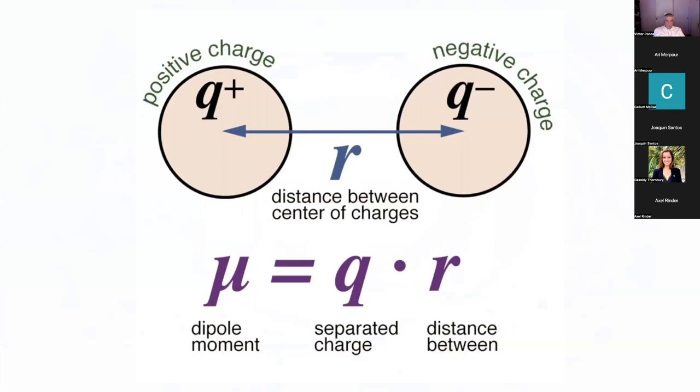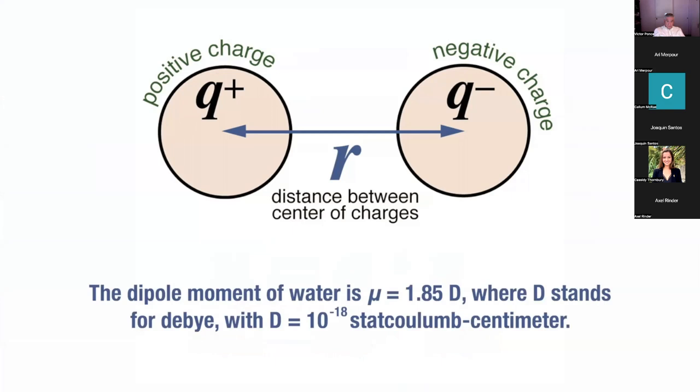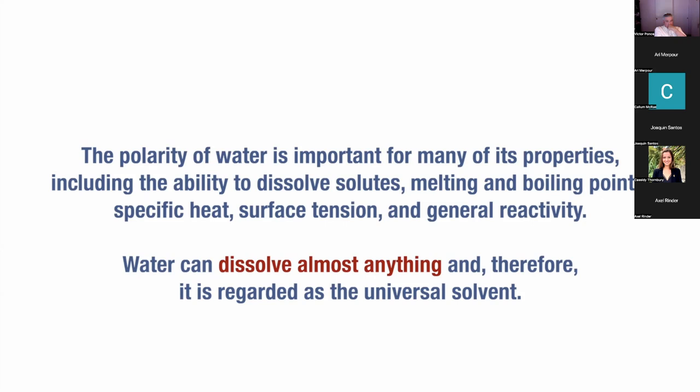The water molecule has the property of polarity, featuring a relatively large dipole moment. The dipole moment arises because oxygen is more negatively charged than hydrogen. Thus, oxygen pulls in the shared electrons, increasing the electron density around itself. The dipole moment of water is mu equal 1.85 d, where d stands for debye, with d equal to 10 to the minus 18 stat coulomb centimeter. The polarity of water is important for many of its properties, including the ability to dissolve solutes, melting and boiling points, specific heat, surface tension, and general reactivity.